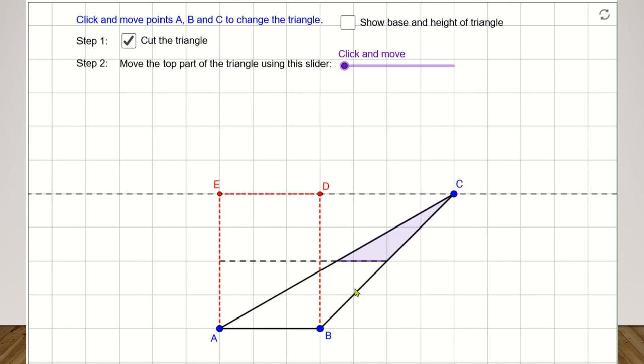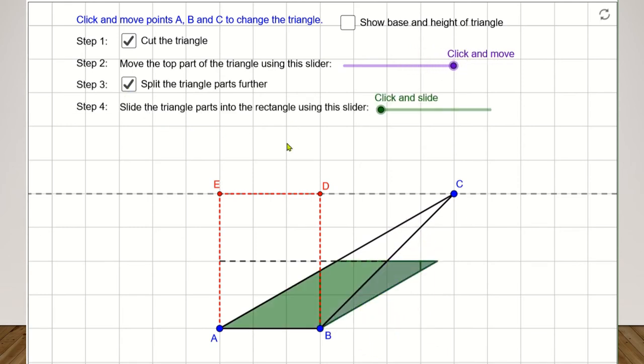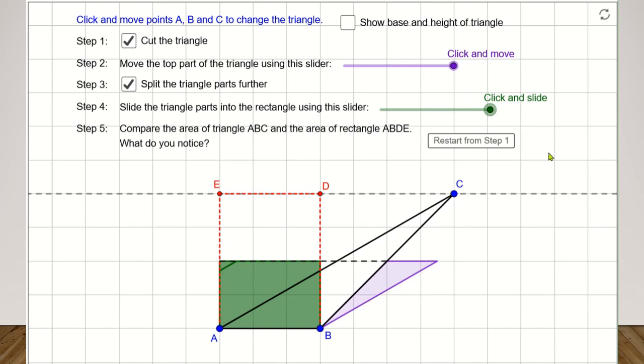Step 1 to step 4 are the same as the previous GeoGebra activity. In step 5, again, we need to compare the area of triangle ABC and the area of rectangle ABDE. What do you notice this time?